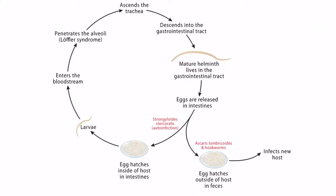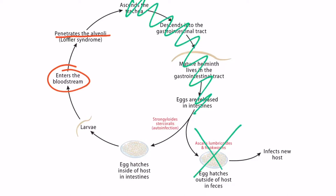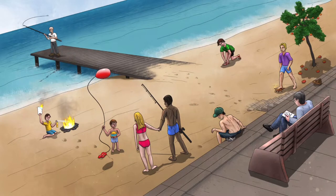Recall that the normal life cycle of hookworms involves penetration of the skin, migration of the larvae into the bloodstream, and then penetration into the alveoli. It's at this point in the life cycle that the patient is presenting, which is why he has a cough. Therefore, the pathogen may be ascending the trachea but hasn't yet descended into the gastrointestinal tract — this is why the stool sample is negative. The patient would most likely present with pulmonary symptoms and an absence of gastrointestinal symptoms, so pulmonary abnormalities on a chest x-ray would be most likely.